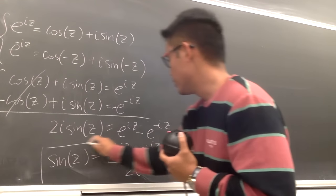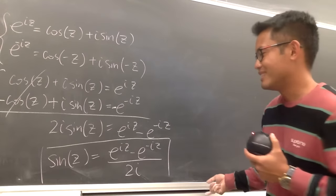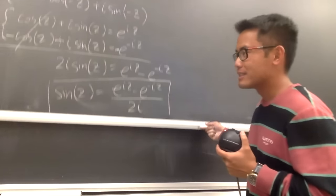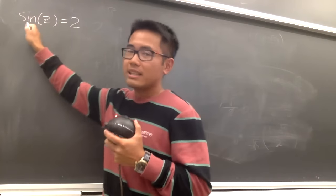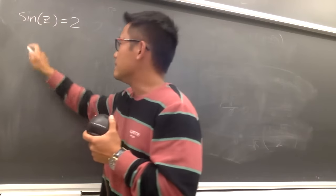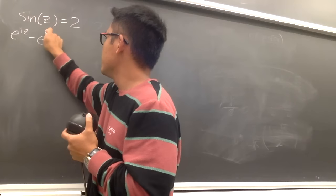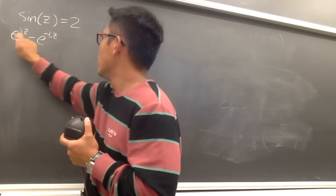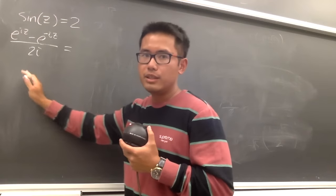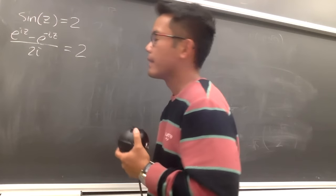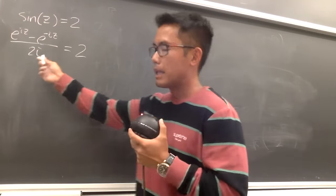This is the new definition of sine in the complex world that we'll use in this video. So getting back to our problem: sine z equals (e to the iz minus e to the negative iz) over 2i, and we set this equal to 2. Multiplying both sides by 2i gives: e to the iz minus e to the negative iz equals 4i.